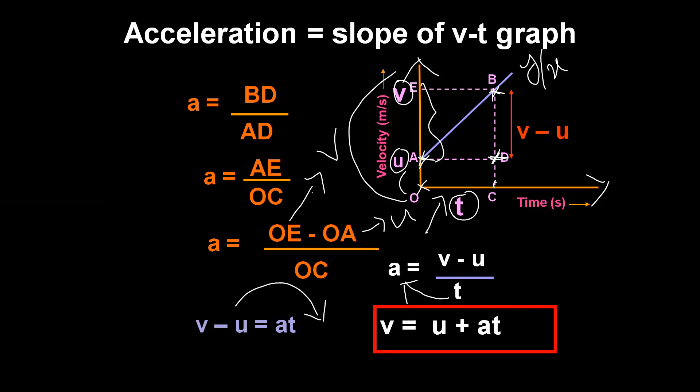This is our first equation of motion, derived from the slope of the velocity-time graph. The first equation of motion represents the velocity-time relationship: V equals U plus AT, where V is the final velocity, U is the initial velocity, A is the acceleration, and T is the time taken.